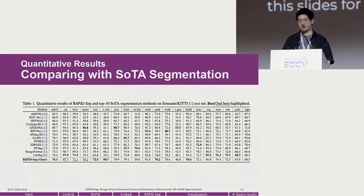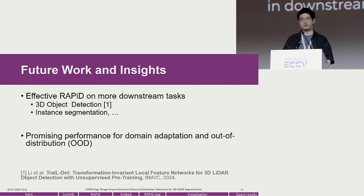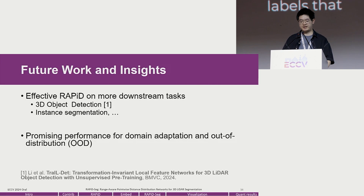More results and visualizations are available in our paper and videos. For future work, our RAPID features have shown significant effectiveness in downstream tasks. For example, our recent BMVC paper shows the effectiveness of RAPID on 3D detection tasks. Moreover, thanks to RAPID's consistent performance and generalization capability, it can function like pseudo-labels, and should show promising performance in domain adaptation and out-of-distribution (OOD) settings.